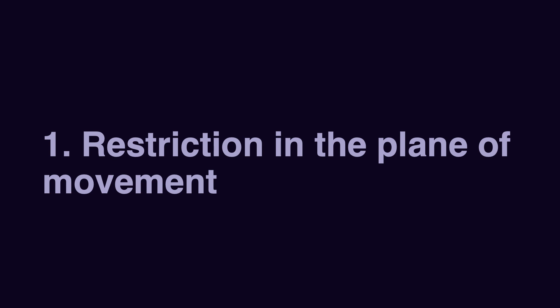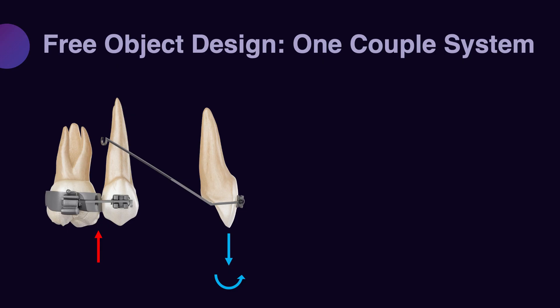However, semi-restricted design has its own limitations, and that will be the focus of discussion today. One of the main limitations of semi-restricted design is the fact that it restricts the movement of the target unit in the plane of movement. For example, we know that for extrusion of the anterior teeth and proclination of anterior teeth, a one-couple system with the anterior v-band is the design of choice.